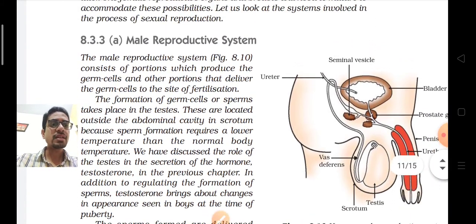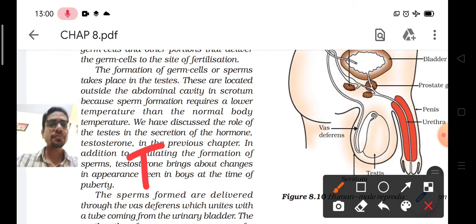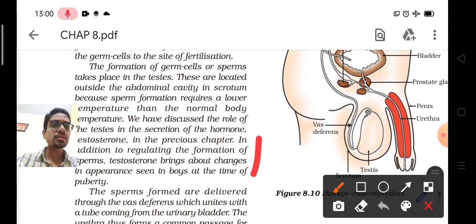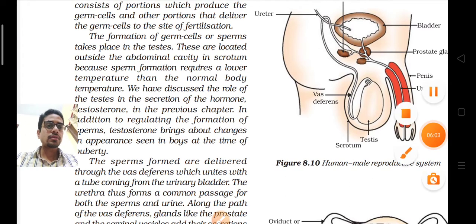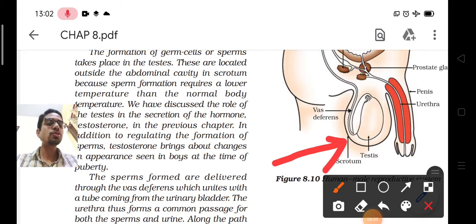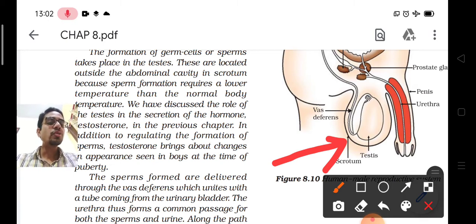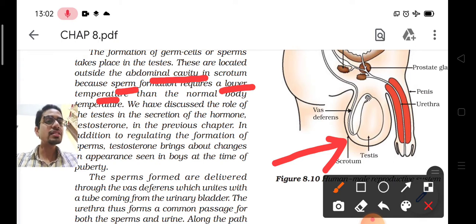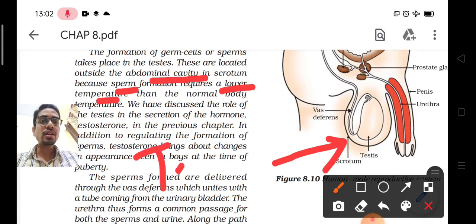This is the male reproductive system. The most important part is the testes. The testes are placed inside the scrotum, which is like a pouch. Inside the scrotum, two testes are present. Testes are the glands located outside the abdominal cavity because sperm formation requires lower temperature. That is why the testes are present outside the body.